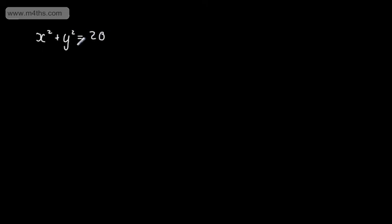Let's do another one. We have x squared plus y squared equals 20 — equation 1, the non-linear equation — and x equals 2y — equation 2, the linear equation. You could write this as y equals one half x, which is a straight line through the origin. Equation 1 is a circle with centre (0, 0) and radius equal to the square root of 20. We'll make a substitution using x equals 2y to eliminate x from equation 1.